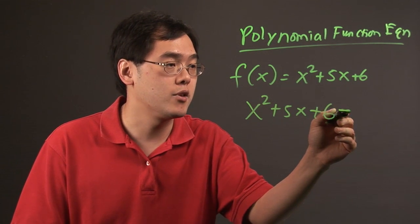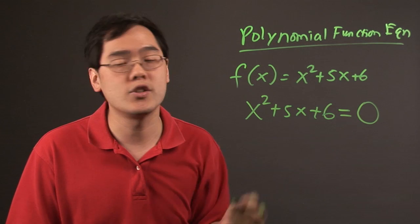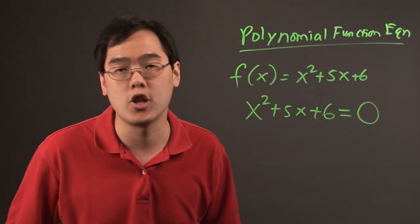Now, the most popular and easy way that you can set it equal to is if you set it equal to 0. That's one of the more popular forms of solving the polynomial equations.